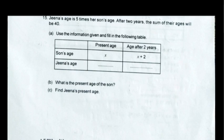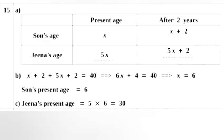Question 15. Gina's age is 5 times her son's age. After 2 years, the sum of their ages will be 40. A. Fill in the table — Son's present age: x, after 2 years: x plus 2; Gina's present age: 5x, after 2 years: 5x plus 2. B. x plus 2 plus 5x plus 2 equals 40, implies 6x plus 4 equals 40, implies x equals 6. Son's present age is 6. C. Gina's present age equals 5 into 6 equals 30.